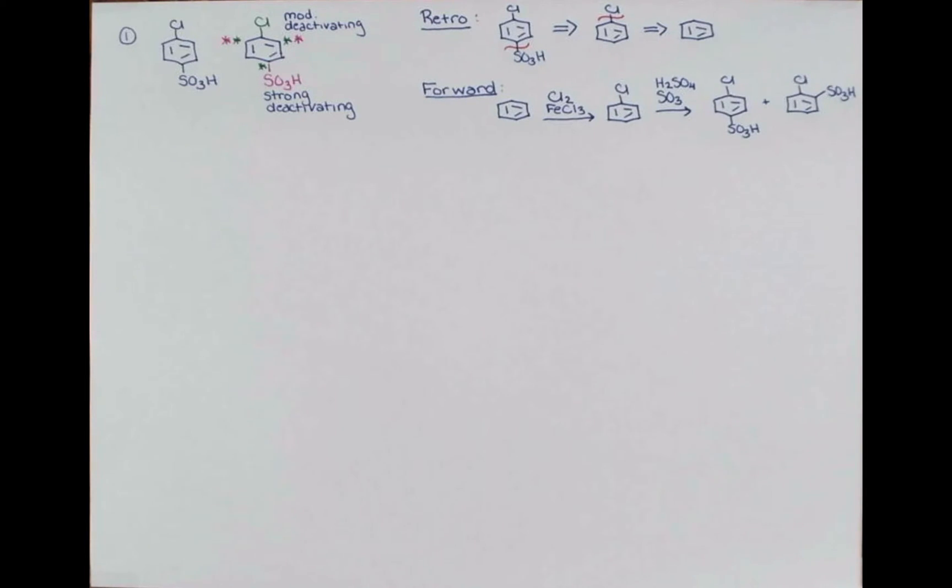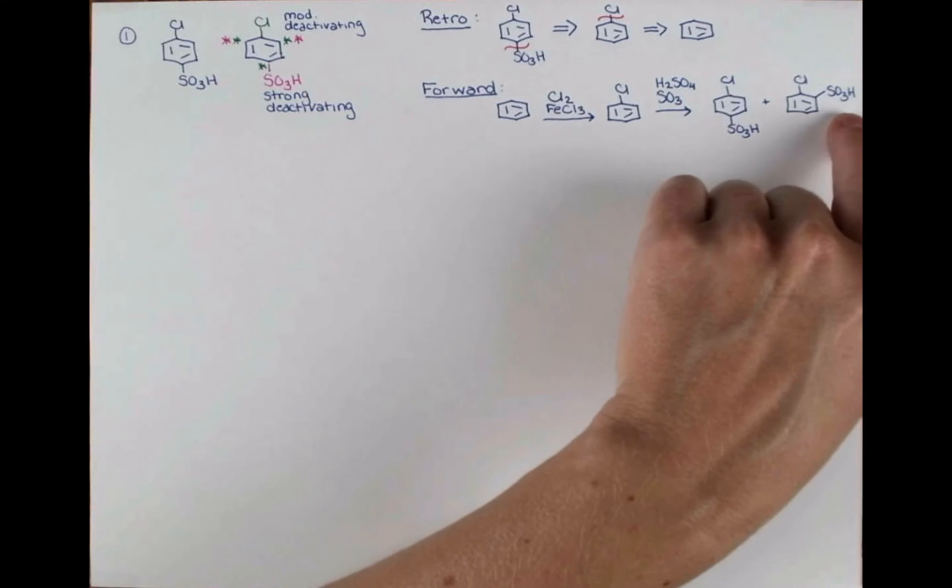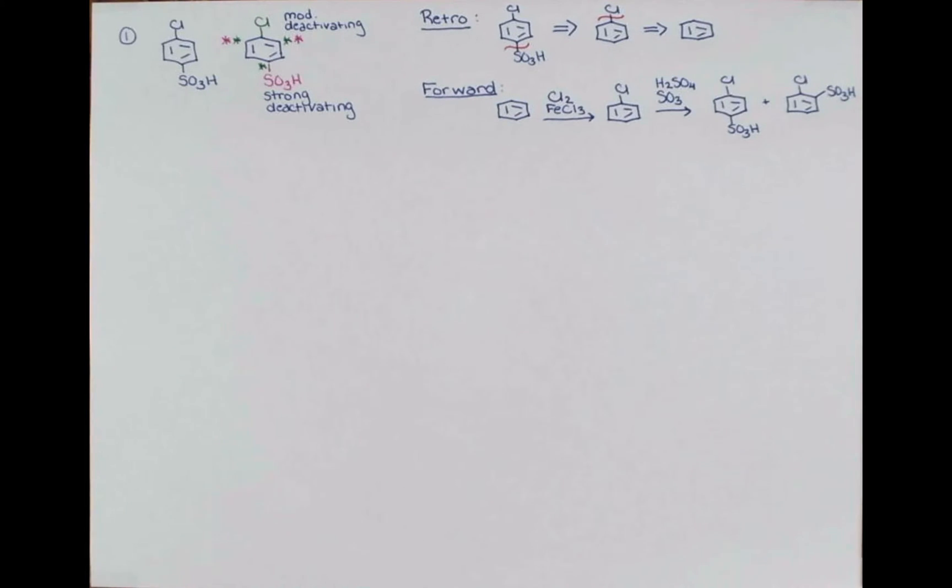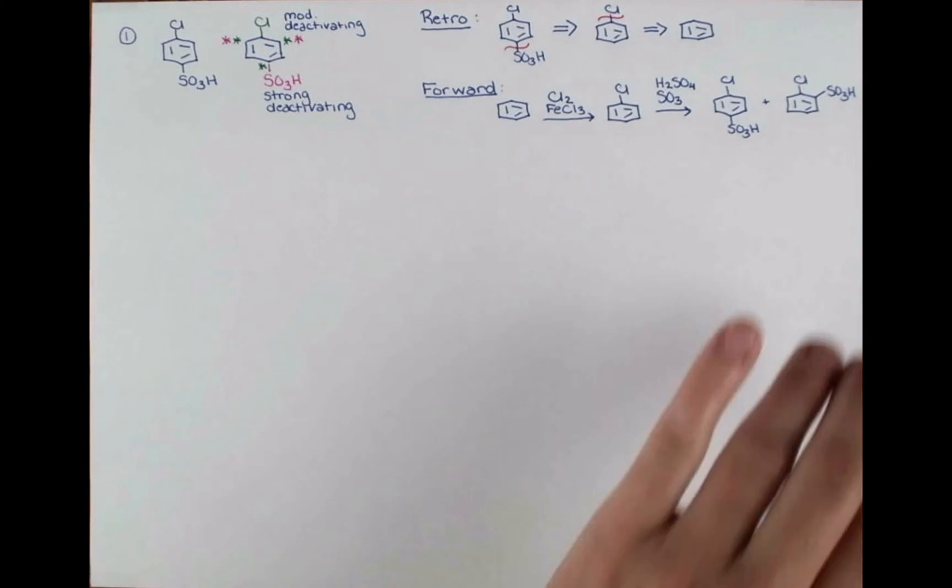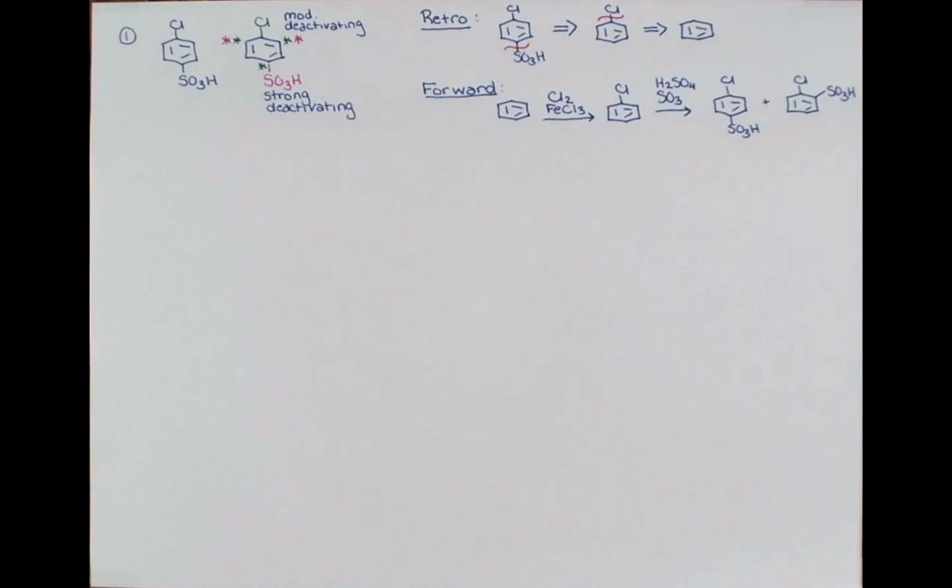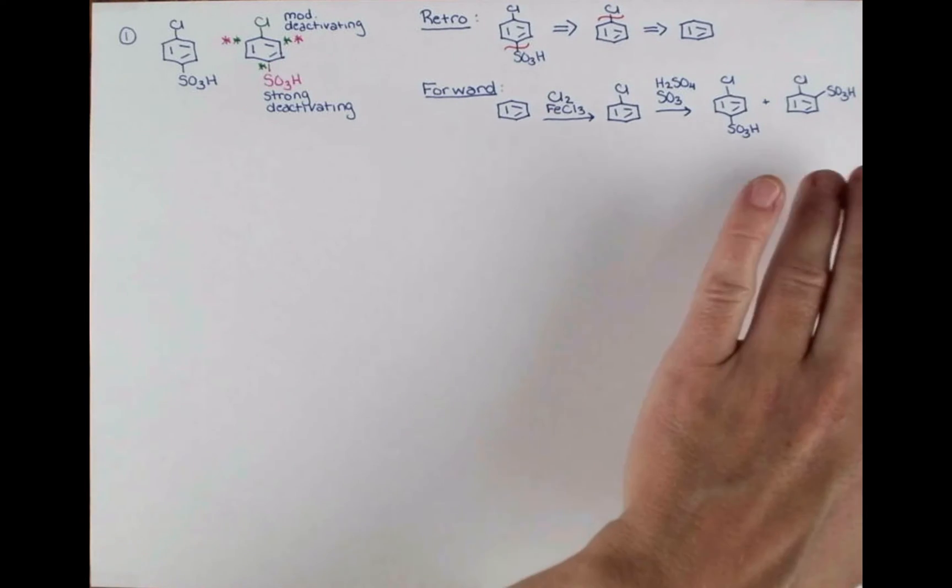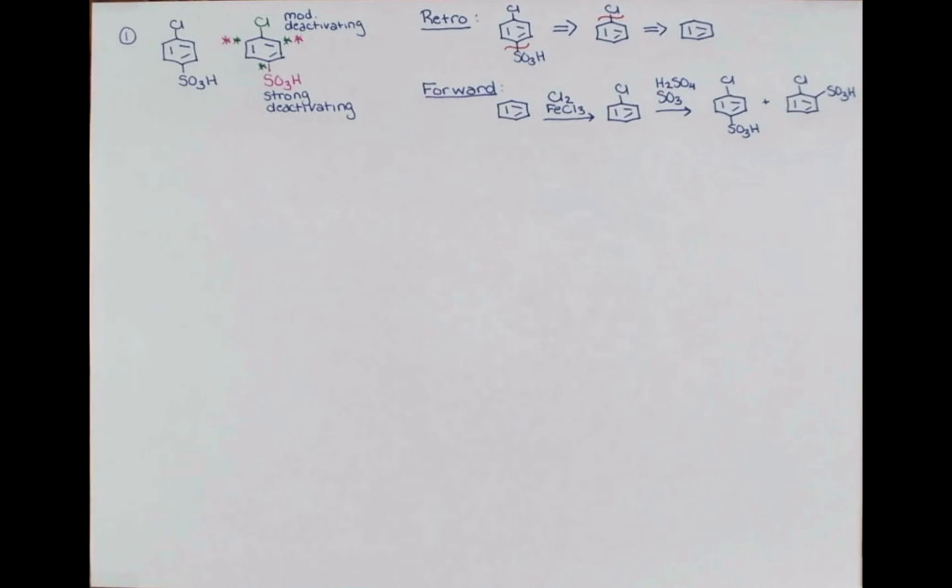Now since chlorine is an ortho-para director, we might get a mixture of ortho and para products. The para product often dominates. It's kind of hard to put a group ortho because of steric hindrance. So we'll get mostly this product. So this is a good reaction. But we might want to acknowledge, if our professor asks us to draw all products, we might want to acknowledge that we will form some of this. And I'm just going to box the product that we want.